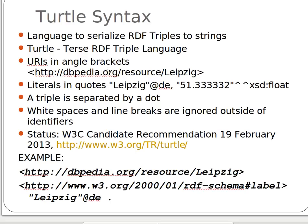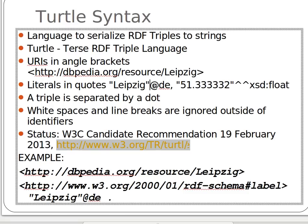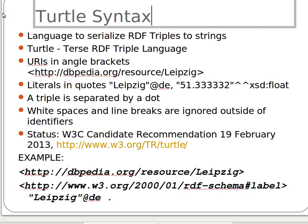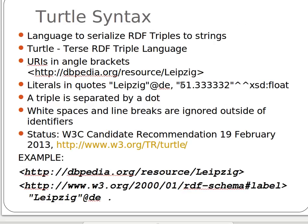Whenever we use URIs in Turtle files, we place them inside angle brackets, as you can see here. Literals are usually used in quotes. Here we can specify the language — 'de' for German — and for a value we can specify it as a floating point value, as you can see here.